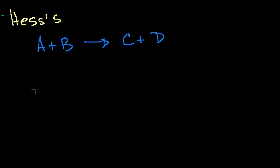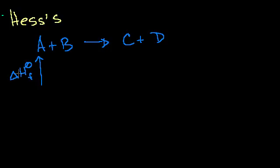All I have are the heats of formation. So I know the heat of formation of A — remember, H isn't for heat, even though we call it heat of formation. It's actually the standard change in enthalpy, which equals the heat of formation. This little degree sign tells us it's the standard heat of formation, which we can look up in a table. And we have the heat of formation of B as well.